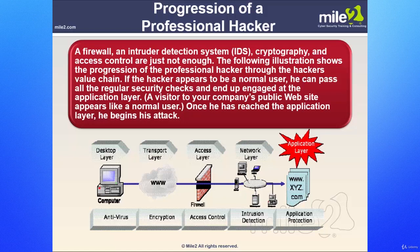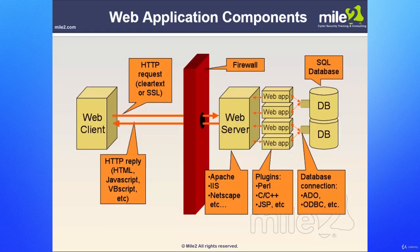Now let's look at the web application components. Here we have our web client, which is generally going to be using a web browser, using HTTP requests and replies. Requests go out in clear text or SSL — secure socket layer — running on port 443. HTTP replies come back as HTML, JavaScript, VBScript, or ActiveX. We also have our firewall, with port 80 or 443 open, connecting us to our web server. We've already bypassed the firewall just by going through a legitimate open port.